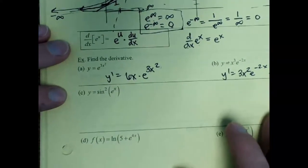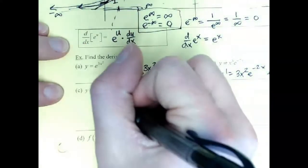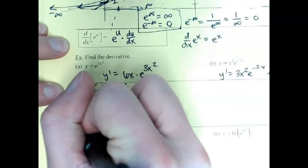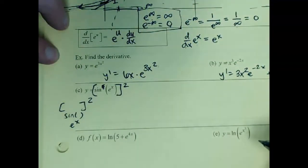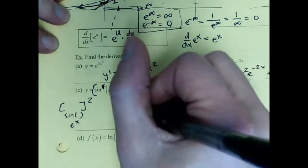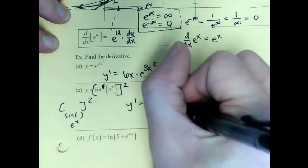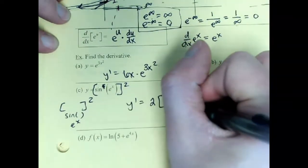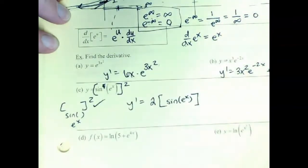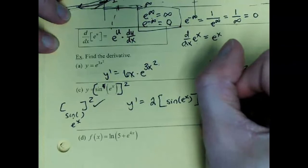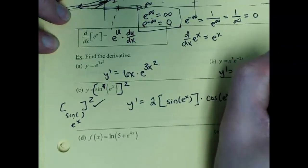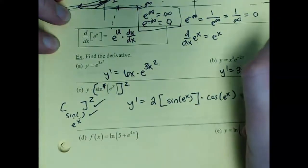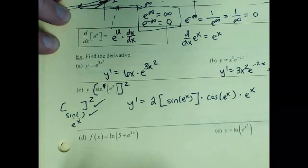We have sine squared of e to the x — a three-layer composite. Rewrite it: you have something squared, then sine of something, then the inner piece e to the x. Chain rule twice. The derivative of something squared is 2 times that something, with sine of e to the x still inside. Then the derivative of sine of something is cosine of that something — cosine of e to the x. Then the innermost piece, e to the x, gives another e to the x. Just chain rule twice.